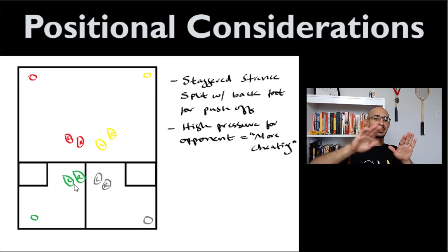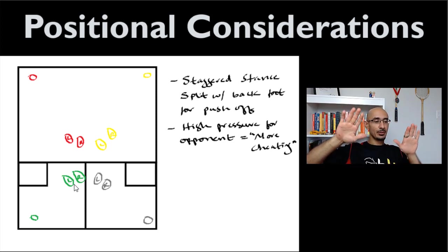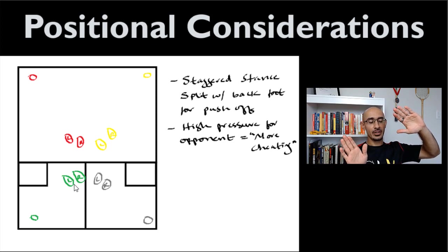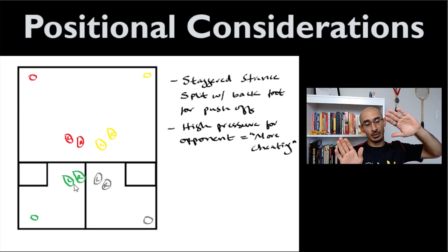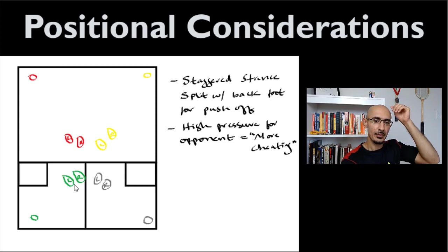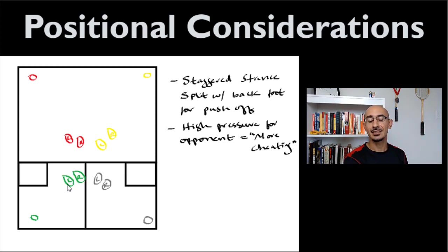Right foot is forward, left foot is back — and that right foot pushes you into the back left corner. You always stay a little bit staggered, and this stagger really helps you move in any direction. Let's say instead of the straight drive, the opponent hits a boast — now the ball is going to the front right. In this stagger, your left foot will push you into the front right.